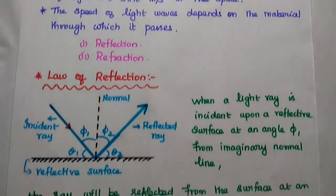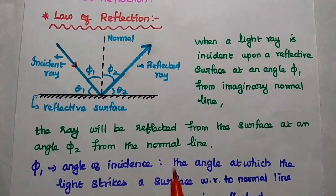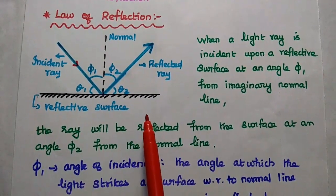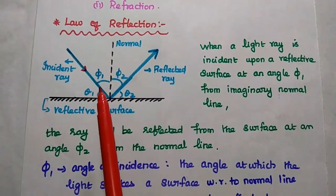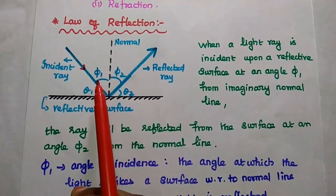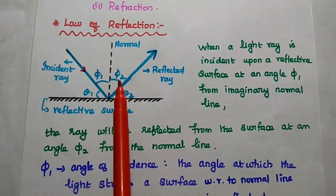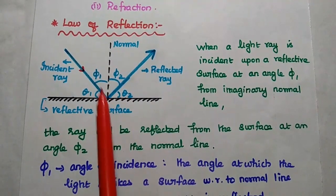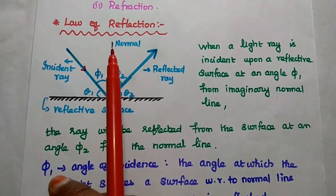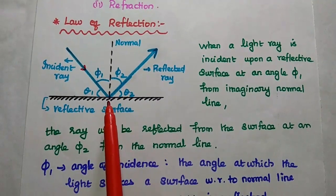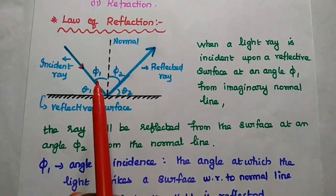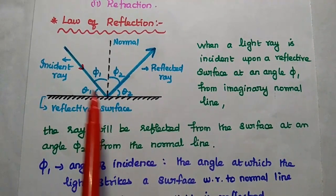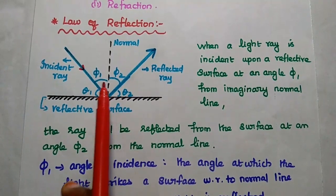So, first we are going to discuss the law of reflection. Here we can consider a reflective surface like glass material. When a light ray is incident on a reflective surface at an angle phi 1, then the ray will be reflected from the surface at an angle phi 2. Here we can consider an imaginary normal, that is a perpendicular line with respect to this surface. Phi 1 is the angle at which the light ray is incident on the surface with respect to this normal line.